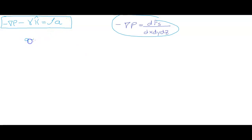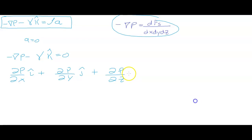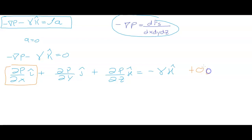If we have a fluid at rest, the acceleration is zero. So the equation becomes: negative gradient of p minus specific weight k equals zero. Expanding the gradient, we get partial p over partial x in i, plus partial p over partial y in j, plus partial p over partial z in k, equal to negative specific weight k. So the i and j components give zero, meaning pressure doesn't vary in x or y.